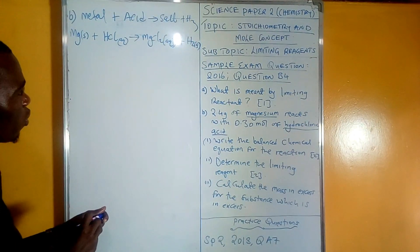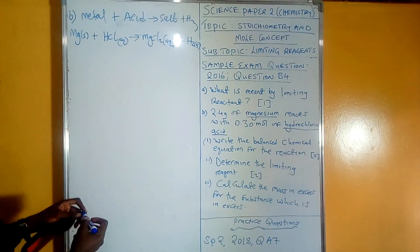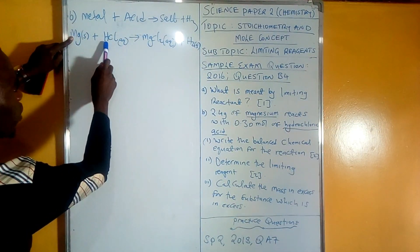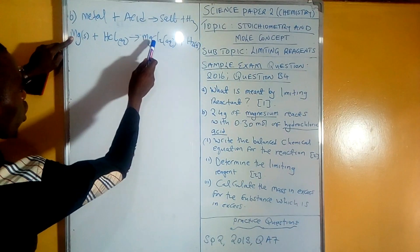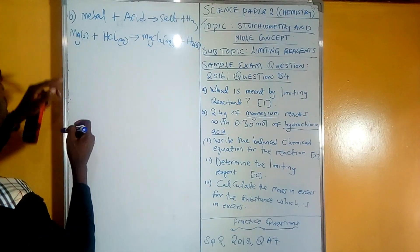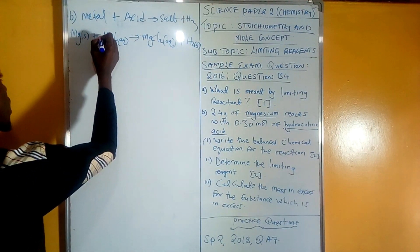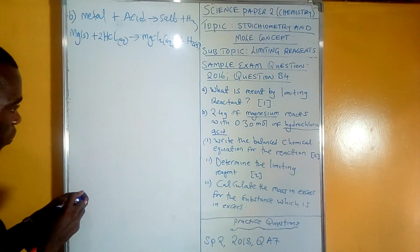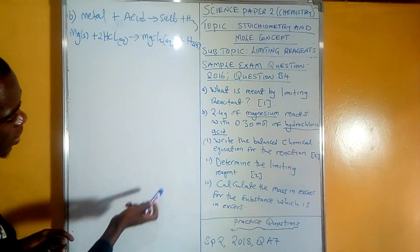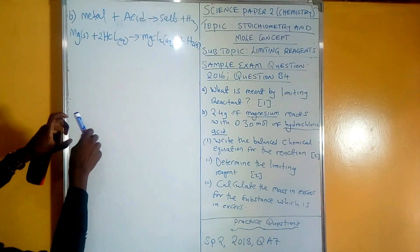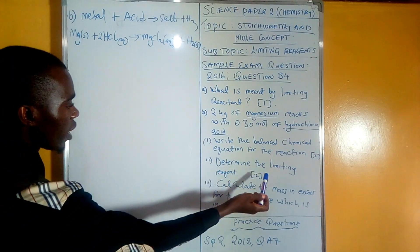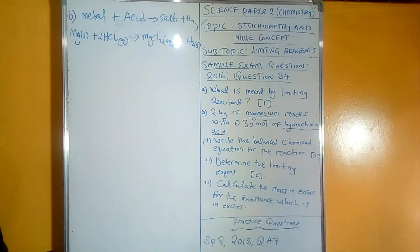To balance this equation, we check: magnesium — one on each side. Hydrogen — one on the left, two on the right. Chlorine — two on the left, one on the right. So to balance, we put a coefficient of 2 in front of HCl. The balanced chemical equation is: Mg(s) + 2HCl(aq) → MgCl₂(aq) + H₂(g). Question b1 has been answered.